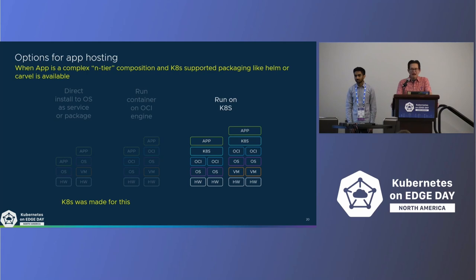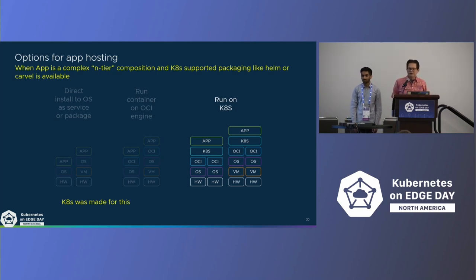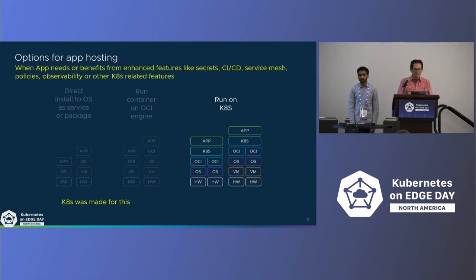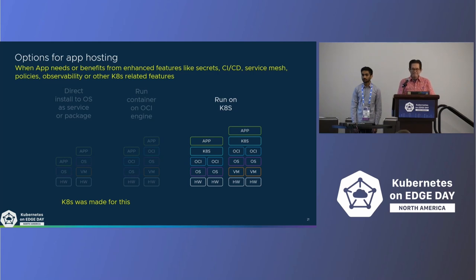When an app is a complex composition of other apps — say a web front end with one or more database backends — Kubernetes is made for this, particularly when a Helm package is available. It's much easier to deploy and update using a higher-level packaging mechanism, and it helps keep things maintained and patched. When your app benefits from features like secrets, CI/CD via Flux, service mesh, policies, or observability, those tend to be Kubernetes-related features.